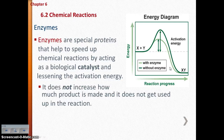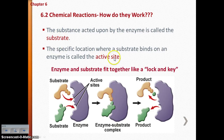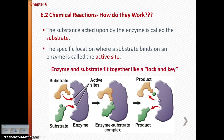Enzymes work with a lock and key model: just like one lock has one specific key, one enzyme fits one specific substrate. The substrate is the substance being acted upon by the enzyme. The location where the substrate binds to the enzyme is called the active site. The substrate fits into the enzyme like a lock and key, and the enzyme produces the final product faster and with less energy.